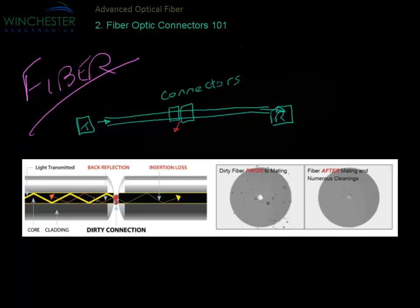Any kind of contamination between these connectors will cause higher loss and potentially cause the link to fail. You can see an end view of this connector where the light is going down the core and dirt particles are around the core. If one of the particles gets in front of the core, it will stop the light from coming through, causing high loss and causing the link to fail.